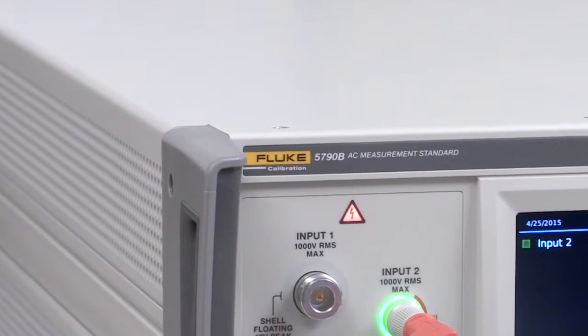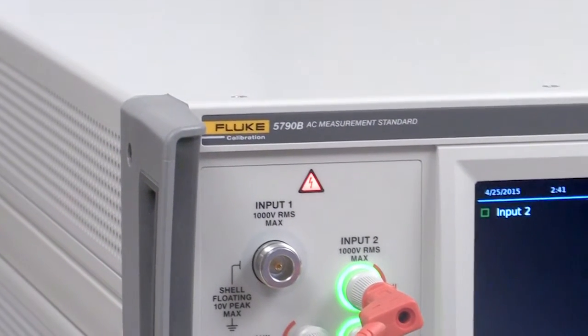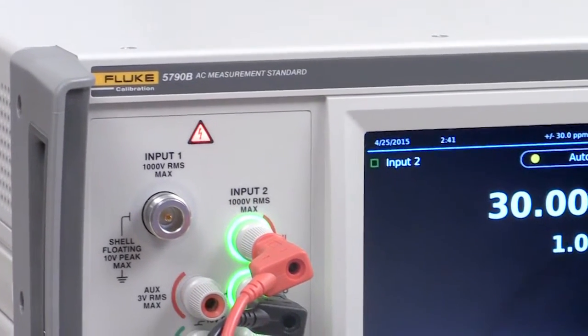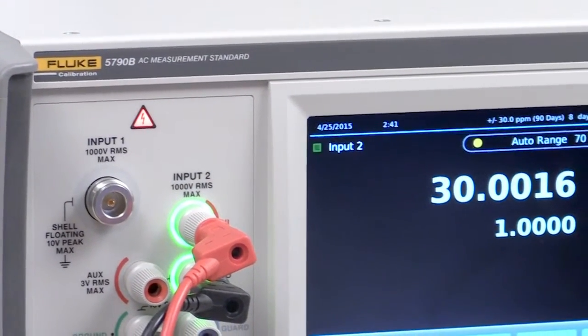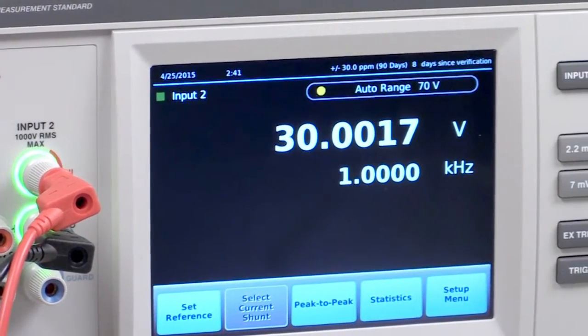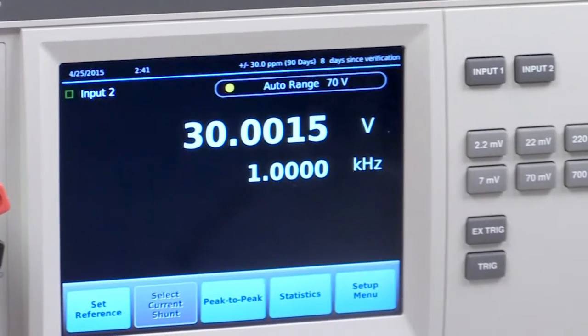The 5790B AC measurement standard is an AC measurement and transfer standard that lets you make AC voltage and current measurements with accuracies as good as 24 parts per million. It combines the accuracy you would expect from a thermal transfer standard with the ease of use of a digital multimeter.